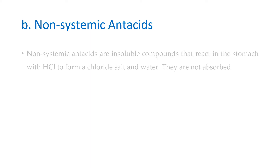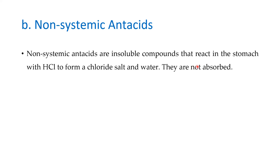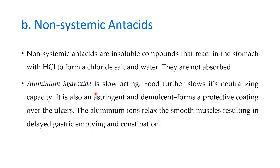Non-systemic antacids are insoluble compounds that react in the stomach with HCl to form chloride salts and water. The advantage is they are not absorbed. Aluminum hydroxide is slow acting; food further slows its neutralization capacity. It is also an astringent and demulcent that forms a protective coating over the ulcer. However, aluminum ions relax smooth muscle, resulting in delayed gastric emptying and constipation.